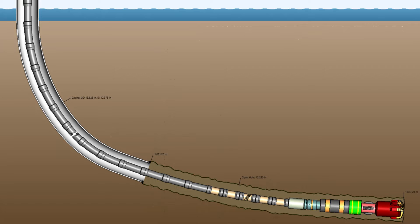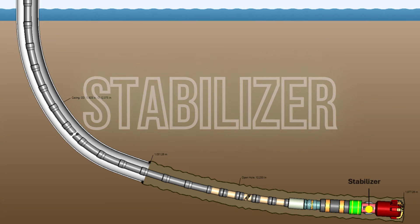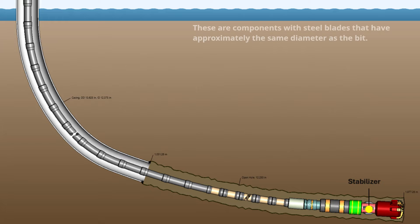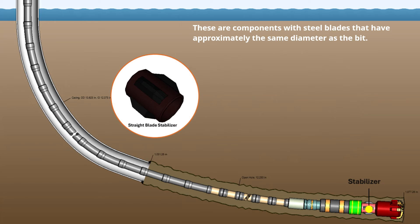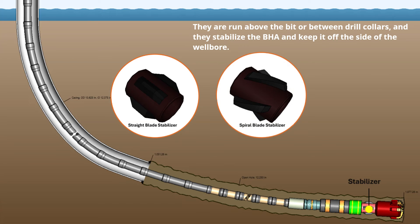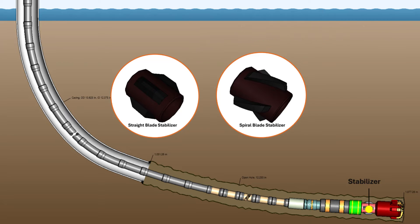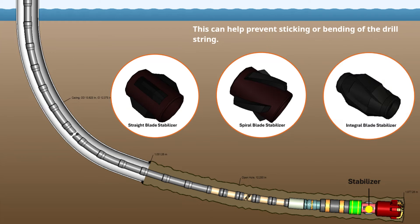Moving on, we have stabilizers. These are components with steel blades that have approximately the same diameter as the bit. They are run above the bit or between drill collars, and they stabilize the BHA and keep it off the side of the wellbore. This can help prevent sticking or bending of the drill string.